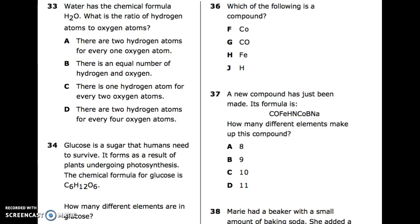33: Water has the chemical formula H2O. What is the ratio of hydrogen atoms to oxygen atoms? A. There are two hydrogen atoms for every one oxygen atom. B. There is an equal number of hydrogen and oxygen. C. There is only one hydrogen atom for every two oxygen atoms. 34: Glucose is a sugar that humans need to survive. It forms as a result of plants undergoing photosynthesis. The chemical formula for glucose is C6H12O6. How many different elements are in glucose?